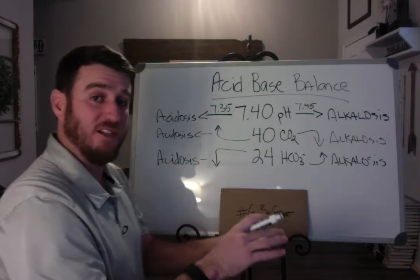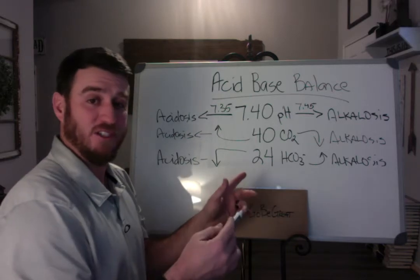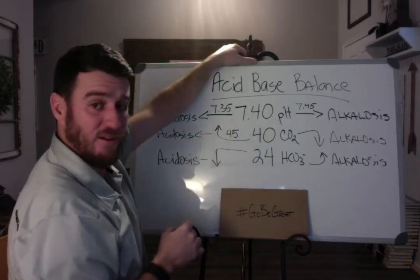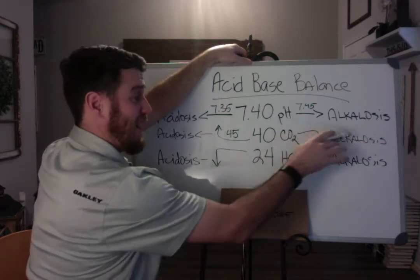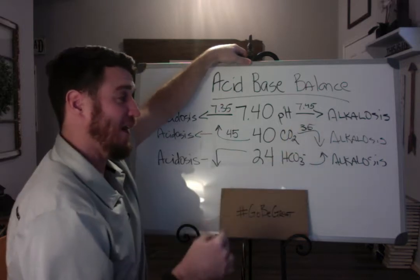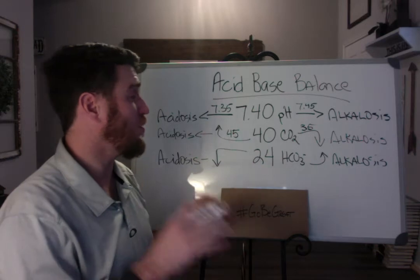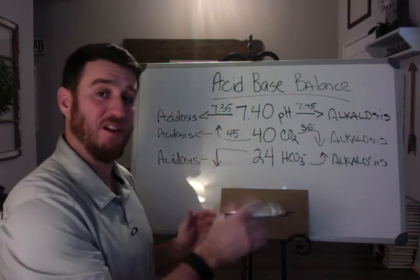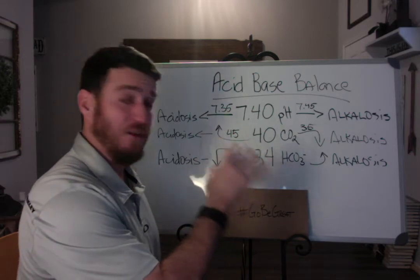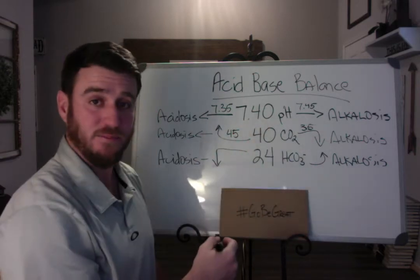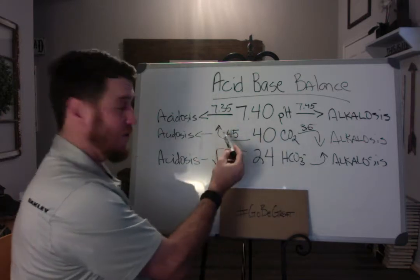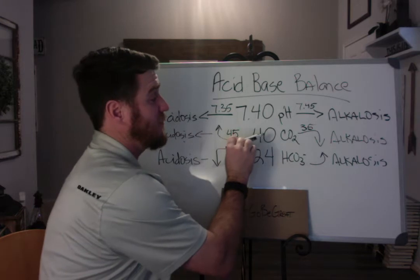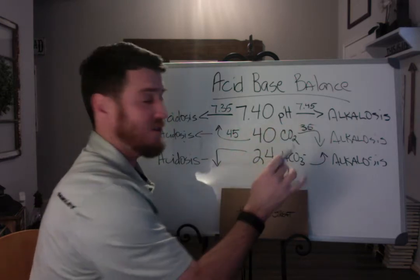Let me recap the normal values. For CO2, when we say it goes up we're talking about greater than 45, and when it goes down to create alkalosis we're talking about less than 35. So your normal CO2 in arterial blood is 35 to 45 millimeters of mercury. As CO2 climbs greater than 45 you become acidotic. As your patient hyperventilates and pushes CO2 less than 35, you find yourself in a state of alkalosis.